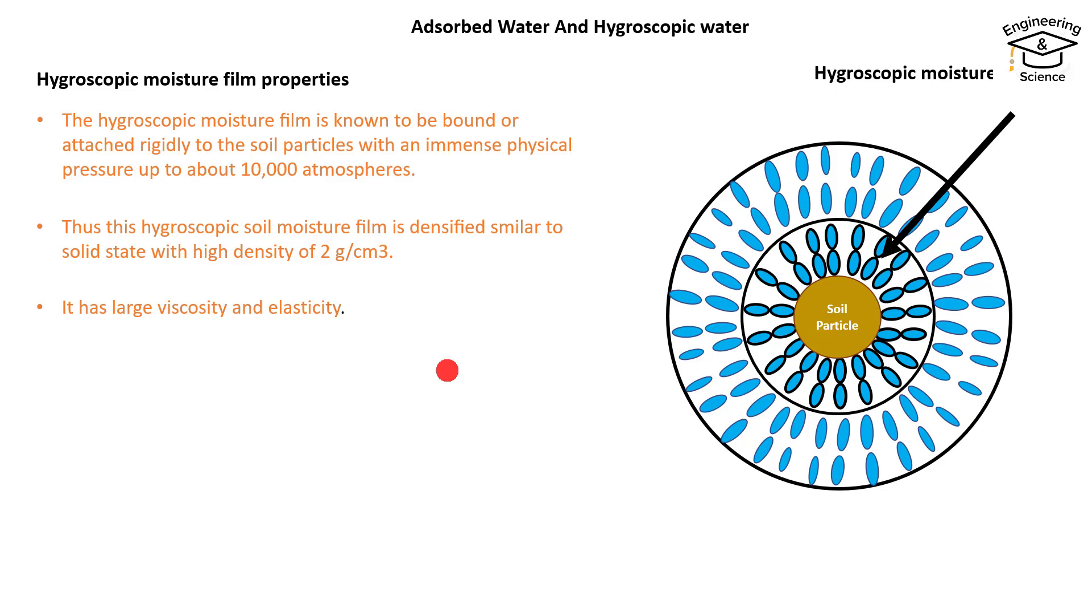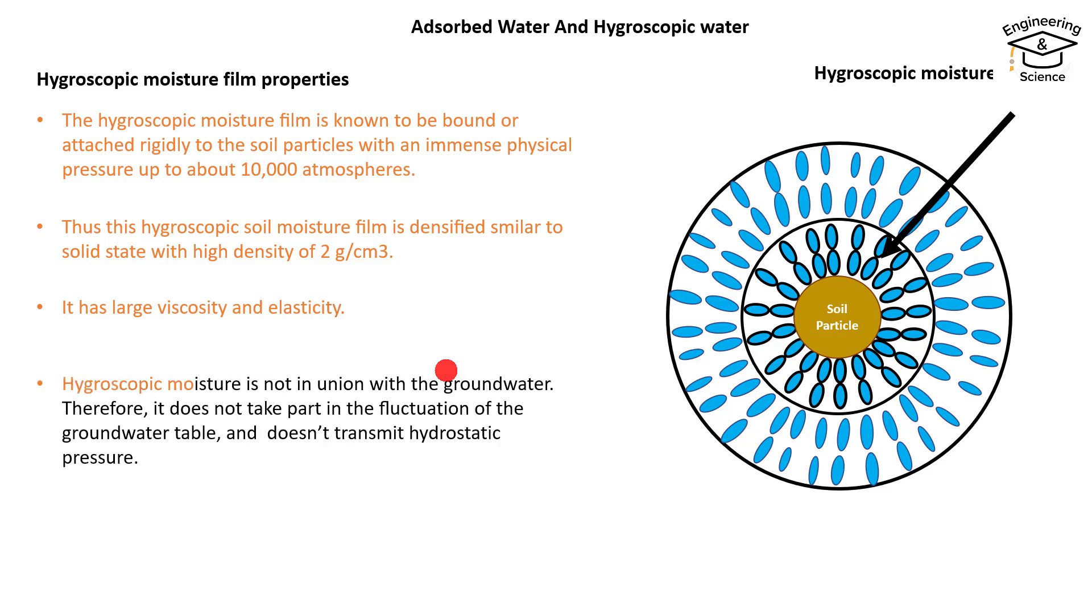It has large viscosity and elasticity. Hygroscopic moisture is not in union with the groundwater. Therefore, it does not take part in the fluctuation of the groundwater table and doesn't transmit hydrostatic pressure.